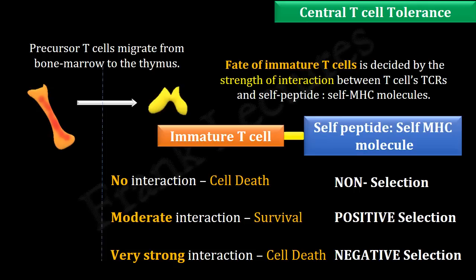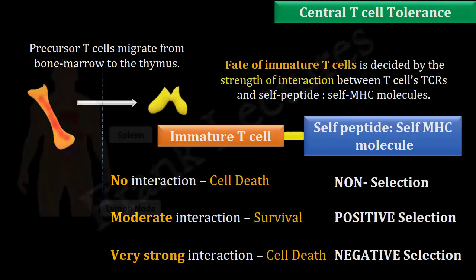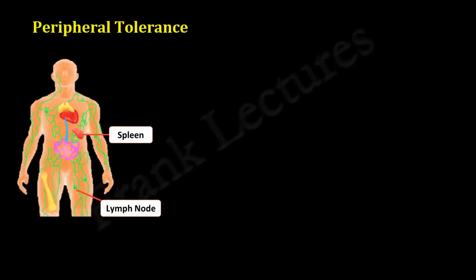In the previous video lecture, we studied central T cell tolerance. We saw how autoreactive T cells are eliminated from the central lymphoid organs in their early developmental stages. Central tolerance is not foolproof, so self-reactive T cells that escape it now enter the peripheral lymphoid organs. It is now the job of peripheral tolerance to ensure that these autoreactive T cells do not attack self tissues.